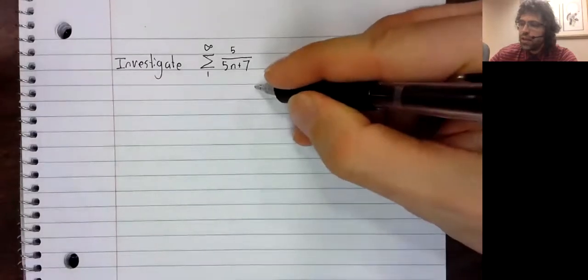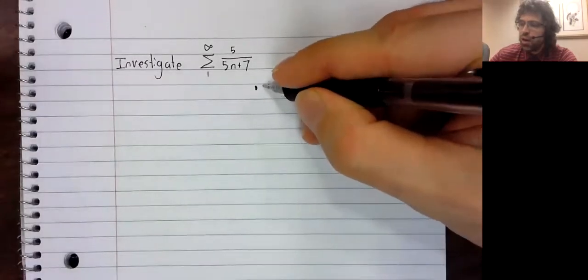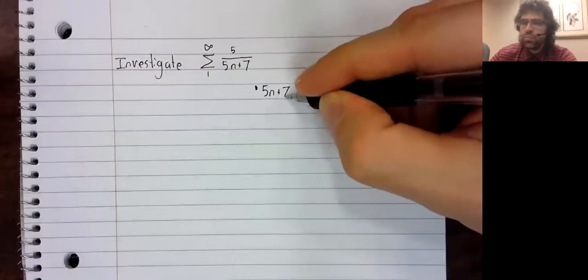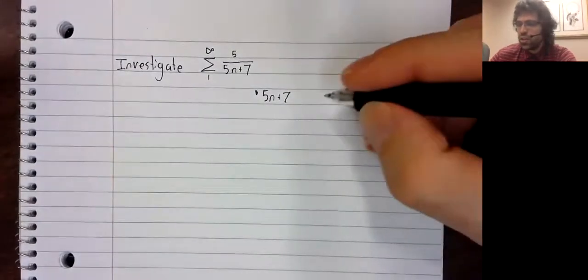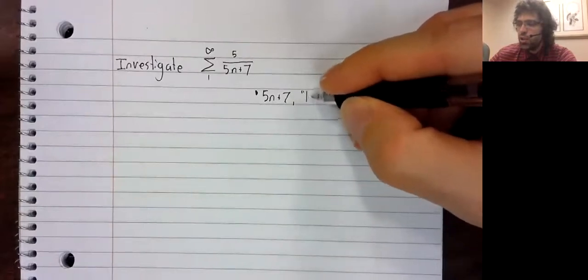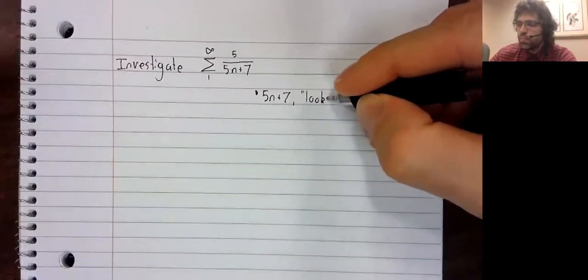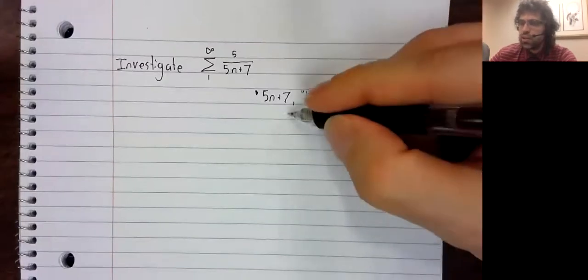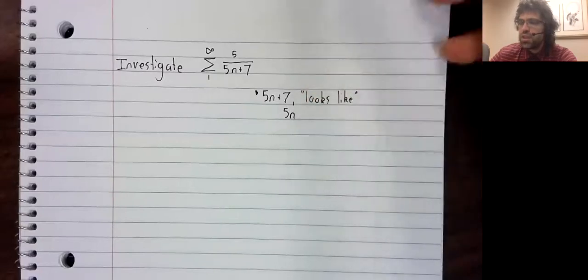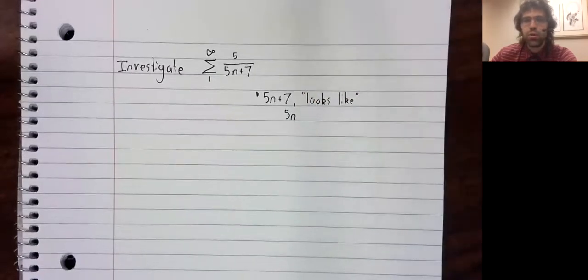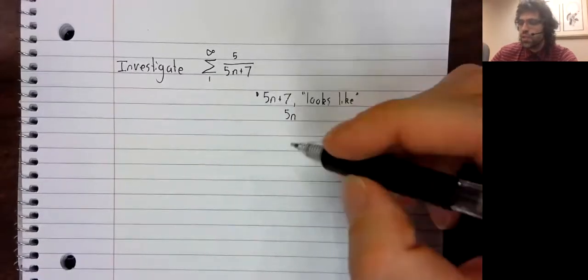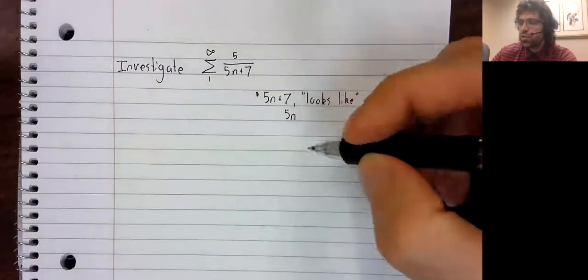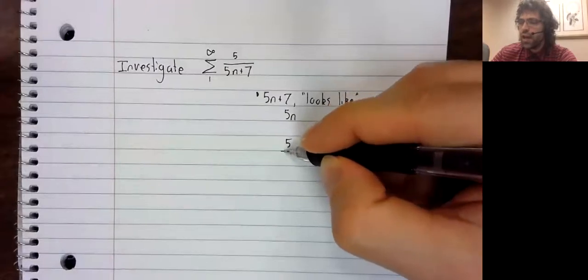When n gets large, 5n plus 7, being a polynomial, ought to look like its leading term. If the denominator starts to look like 5n,